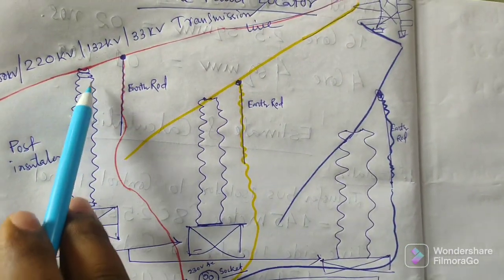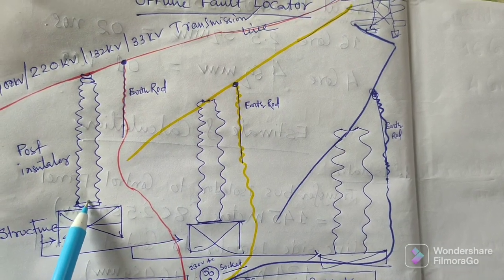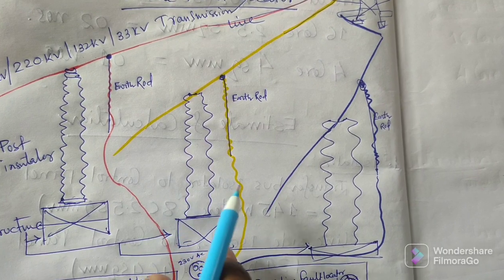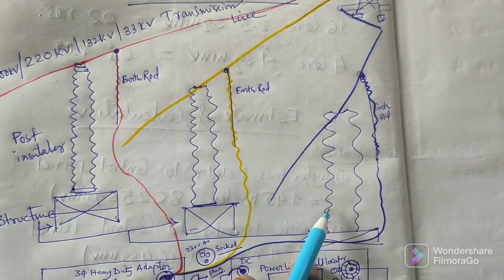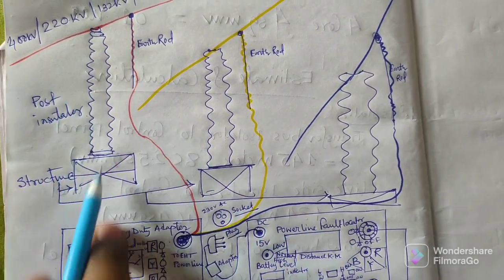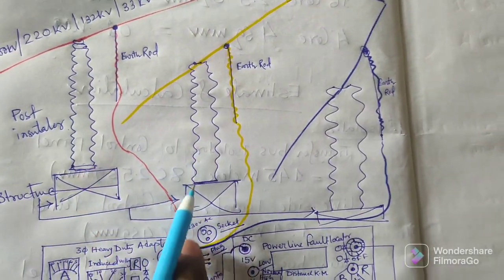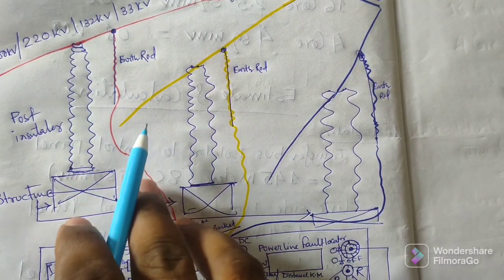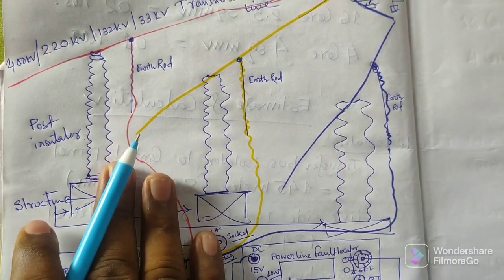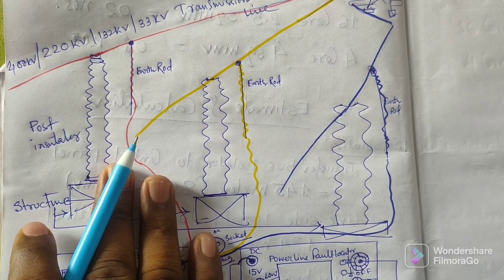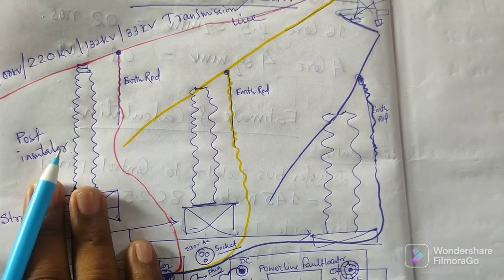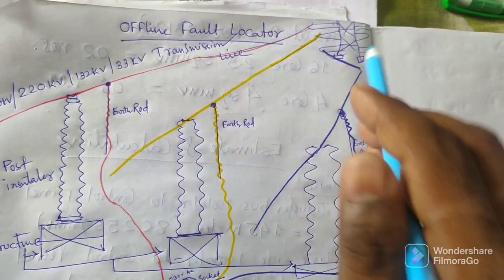I have drawn the post insulator — it's called the PI. It may be 220 kV or 400 kV as per the requirement. This is the yellow phase PI, this is the blue phase PI. On that structure the PI is just holding the conductors. This is the inside of the power plant or substation, and this is the outside part of the line.